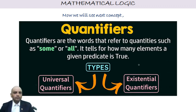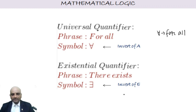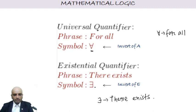Now moving to quantifiers. Quantifiers are words that refer to quantities — like 'some' and 'all' — telling how many elements make a predicate true. There are two types: the universal quantifier, whose symbol is an inverted A (∀), meaning 'for all'; and the existential quantifier, whose symbol is an inverted E (∃), meaning 'there exists.'